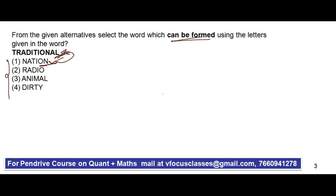For example, NATION has letters N-A-T-I-O-N. In NATION there are two N's, but in TRADITIONAL there is only one N, so you can't form NATION. The second option is RADIO — R, A, D, I, O — you can find all these letters in TRADITIONAL, so RADIO can be formed. The third option ANIMAL requires M, which is not in TRADITIONAL. The fourth option DIRTY requires Y, which is also not in TRADITIONAL.